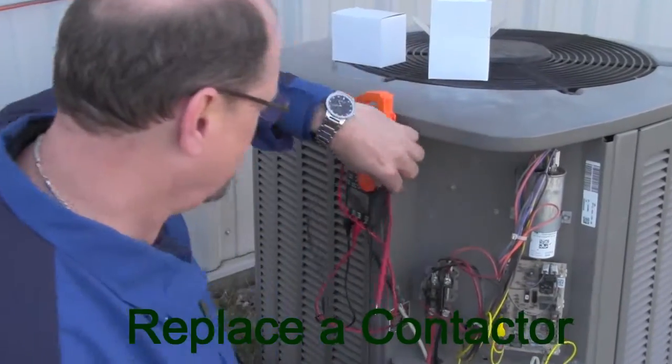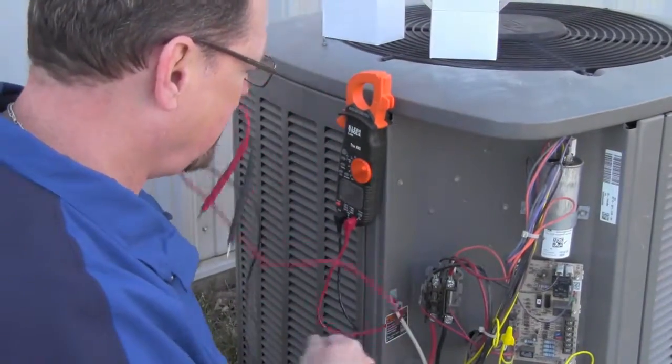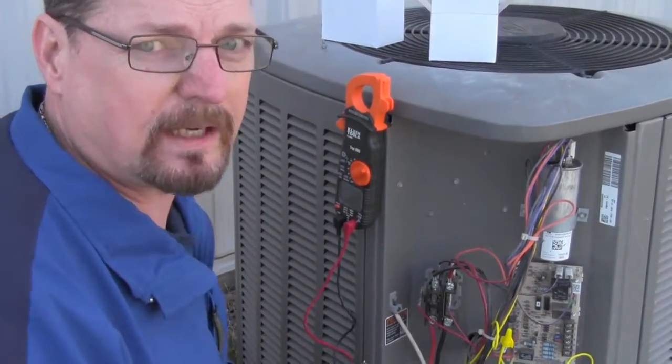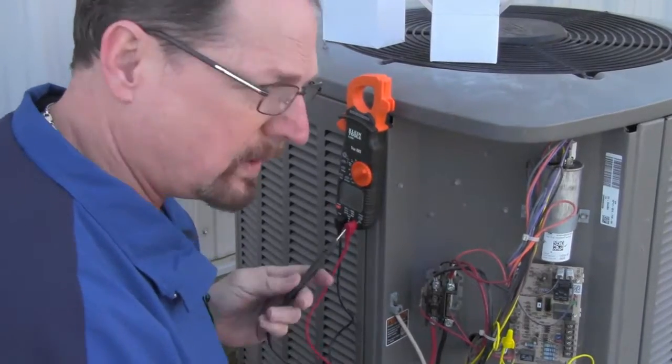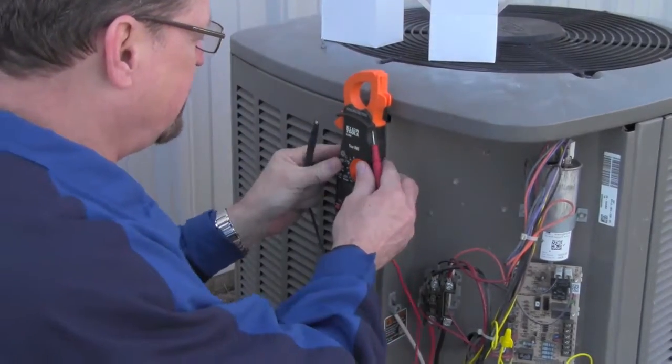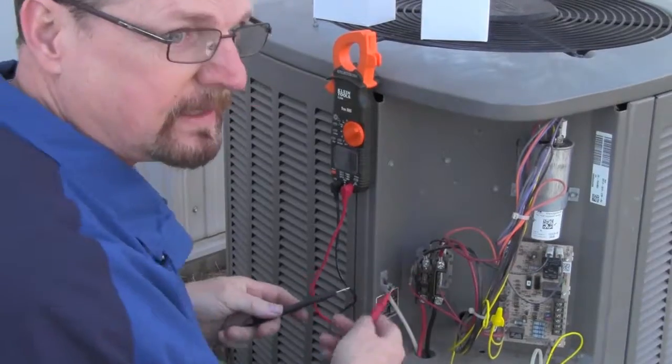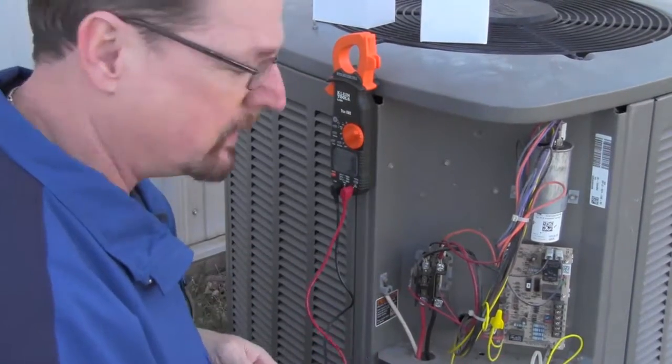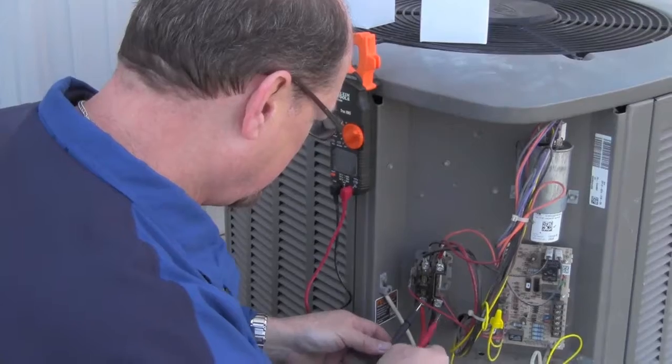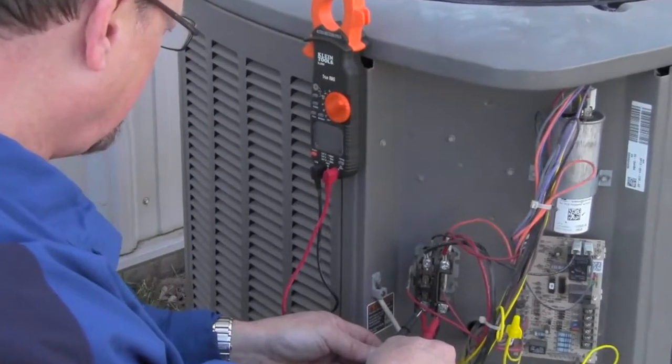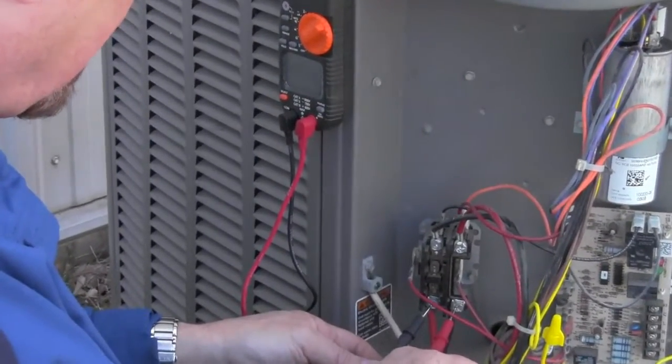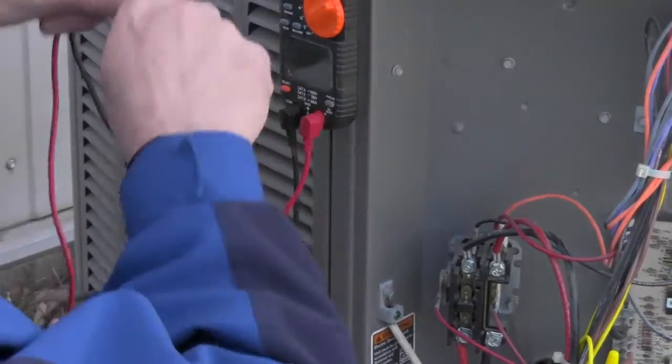First thing that we want to do is make sure that we go ahead and get our disconnect shut off. We want to make sure we don't have power. So you definitely want, before you start touching stuff in here, use your meter to make sure everything's off. And I'm at zero.